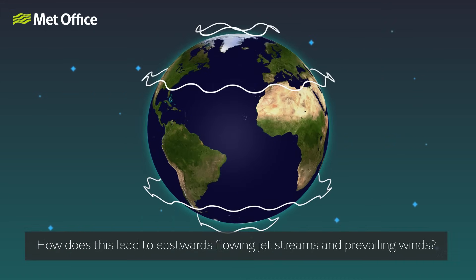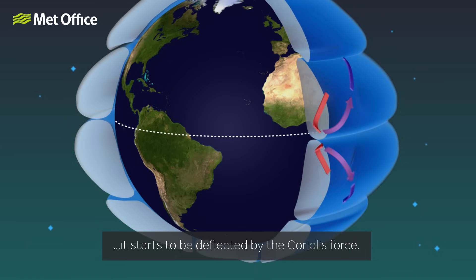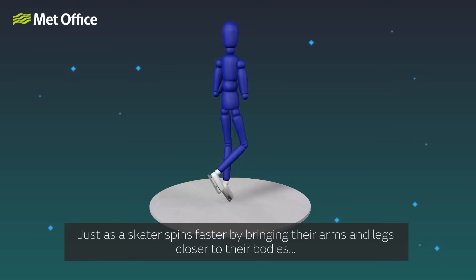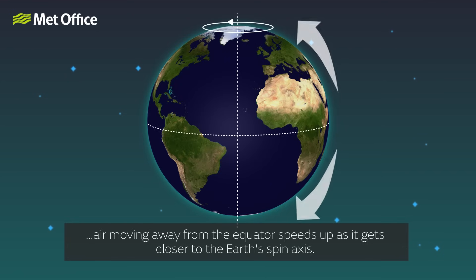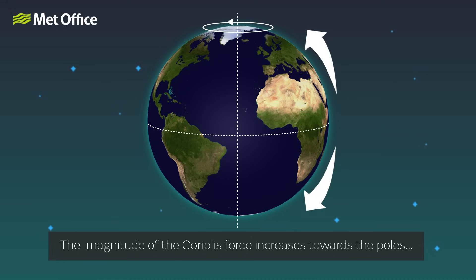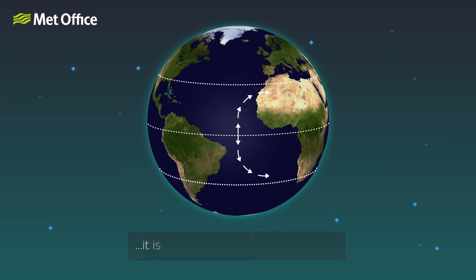How does this lead to eastward-flowing jet streams and prevailing winds? As air moves away from the equator at the top of the Hadley cells towards higher latitudes, it starts to be deflected by the Coriolis force. Just as a skater spins faster by bringing their arms and legs closer to their bodies, air moving away from the equator speeds up as it gets closer to the Earth's spin axis. This process is known as the conservation of angular momentum. The magnitude of the Coriolis force increases towards the poles, so by the time the air reaches 30 to 40 degrees north or south, it is moving in an eastward direction.